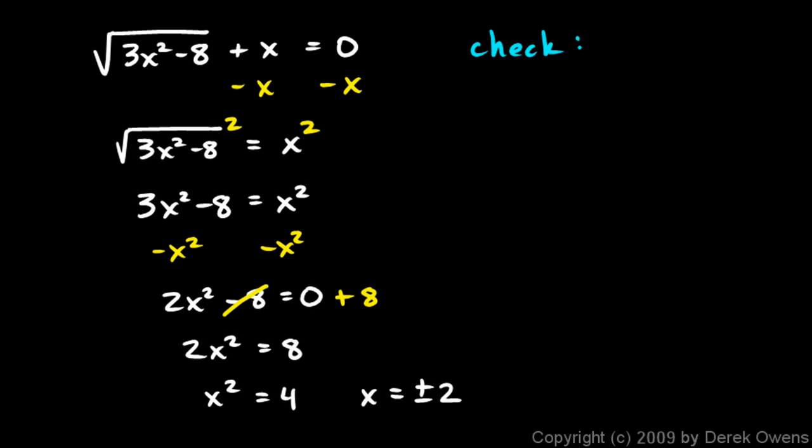Let's check. I'll start. I'll check the 2. I write 3 times 2 squared minus 8 plus 2 equals 0. Let's do that. 3 times 2 squared is 3 times 4. That's 12 right there. Minus 8 is 4. I have the square root of 4 plus 2 equals 0. That's 2 plus 2 equals 0. That does not work. Positive 2 does not work.